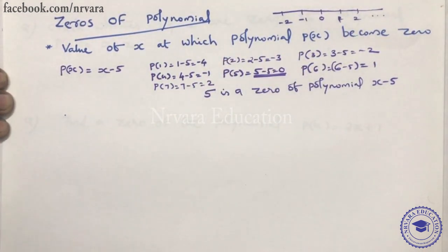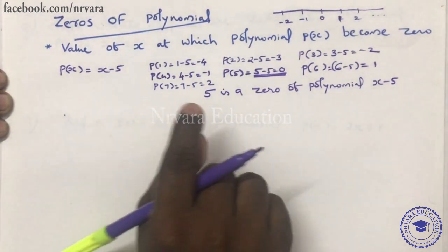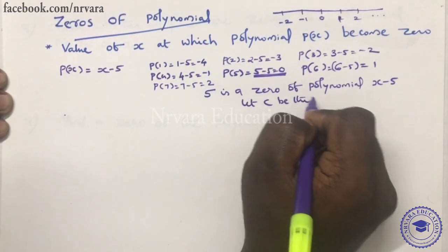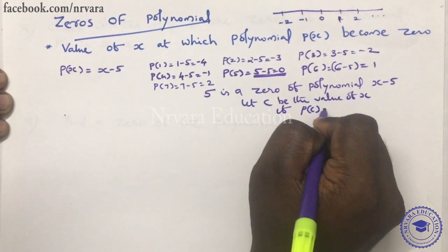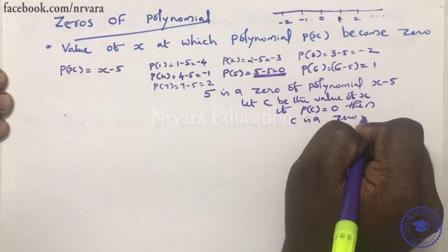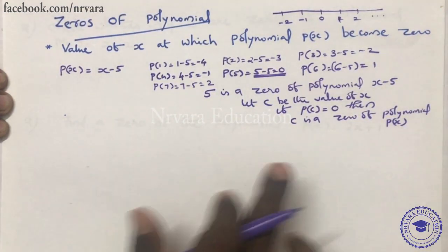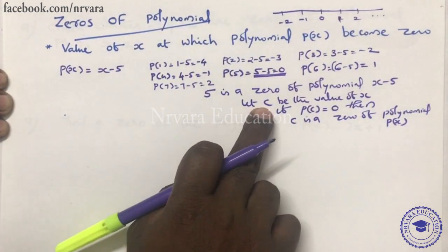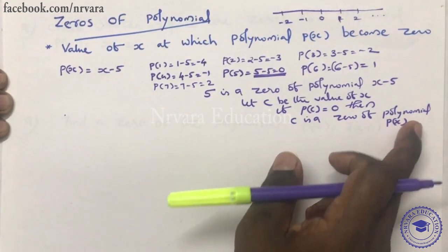If P of x equals 0, then c is a zero of the polynomial. The value of x at which the polynomial P of x becomes 0 — I substitute the value of x and get 0. That value of x is called the zero of the polynomial P of x.